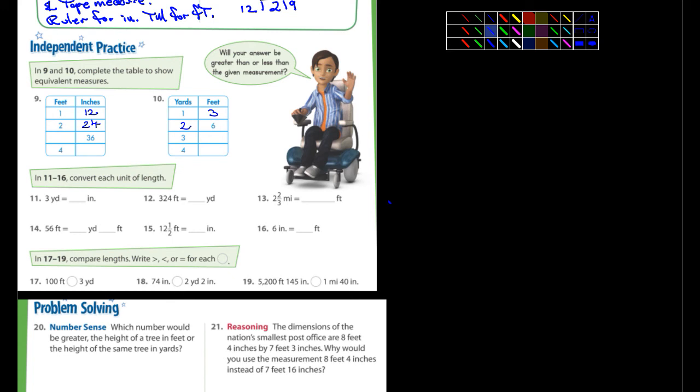11 through 16. Again, convert. Let's look at number 15. So, 12 and a half feet is how many inches? Well, first off, how many inches are in one foot? 12. So you're going to have to multiply 12 and one half by 12 to get how many inches that would be.